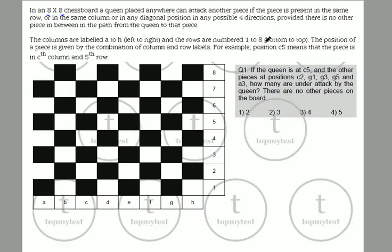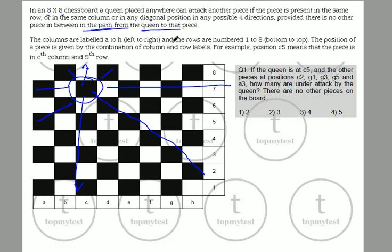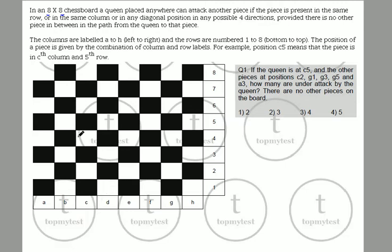The columns are labeled from A to H and the rows are numbered 1 to 8, bottom to top. So if a queen is placed at a position, it can attack any piece along the column, any piece on the row, or any piece on the diagonal with no blocking piece in between. For example, c5 means the position is in column C, fifth row.